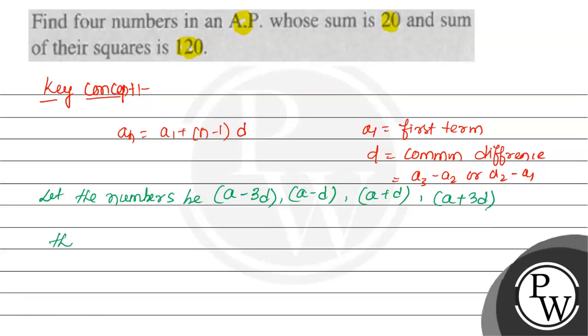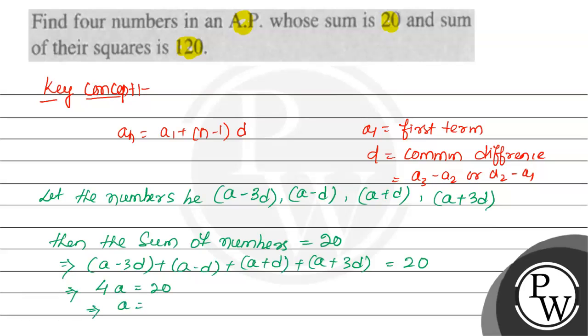Then the sum of numbers will be (A-3d) + (A-d) + (A+d) + (A+3d) equals 20. That implies 4A equals 20, so A equals 20 by 4, which is 5.